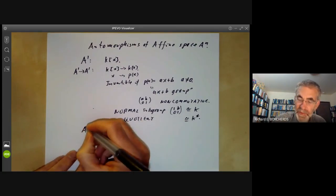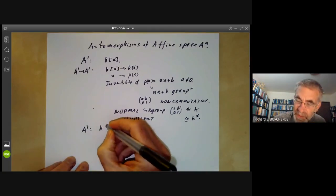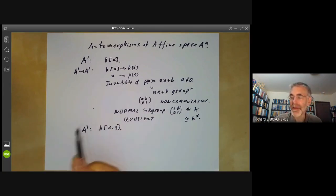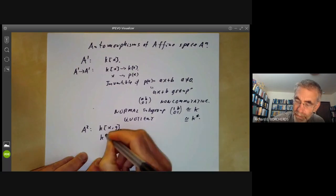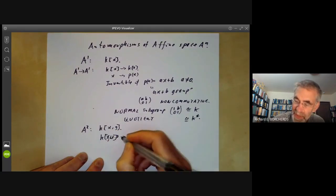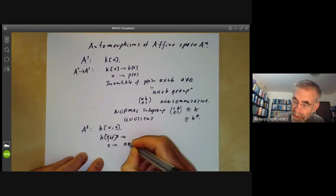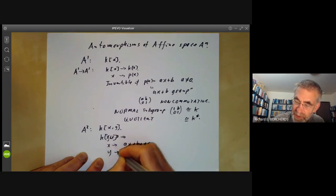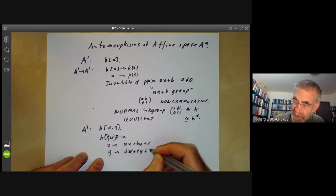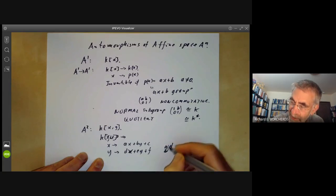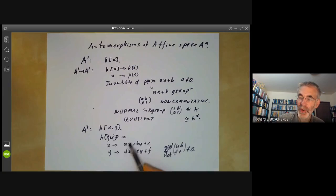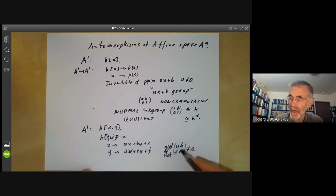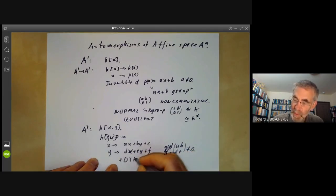So what about A²? Here we have automorphisms of polynomials in two variables. By analogy, there are some pretty obvious automorphisms. We can map k[x,y] where x goes to ax + by + c and y goes to dx + ey + f, where the matrix [a,b; d,e] has determinant non-zero. This certainly does give you a group of automorphisms of affine space. However, the full group is much bigger.